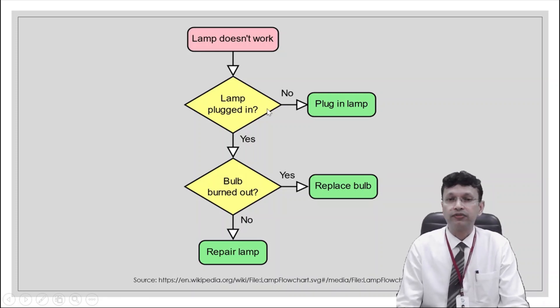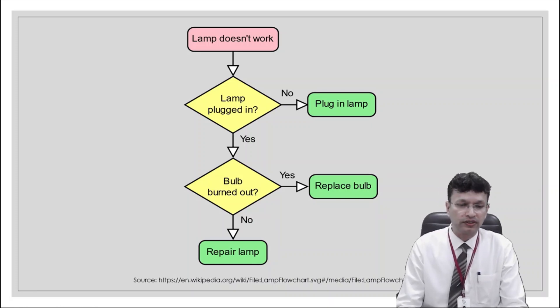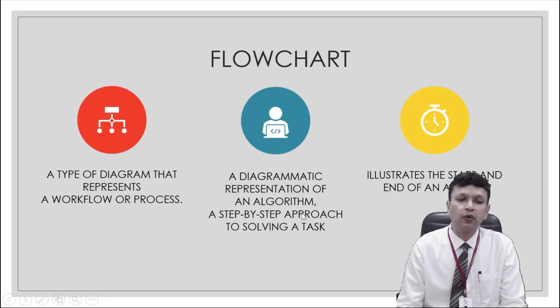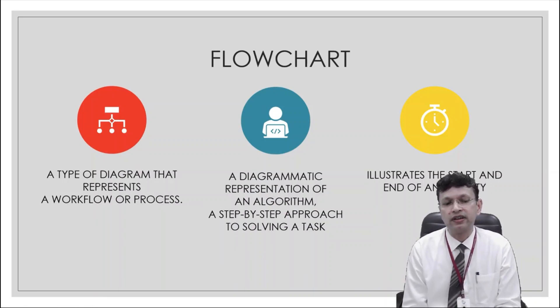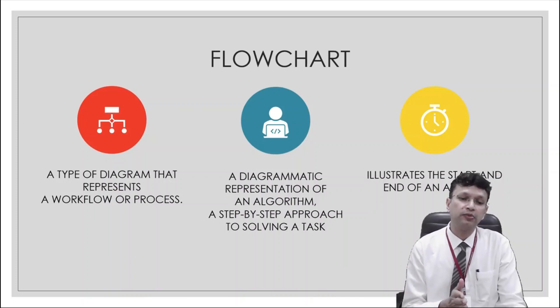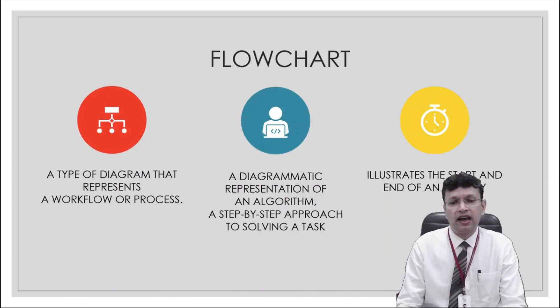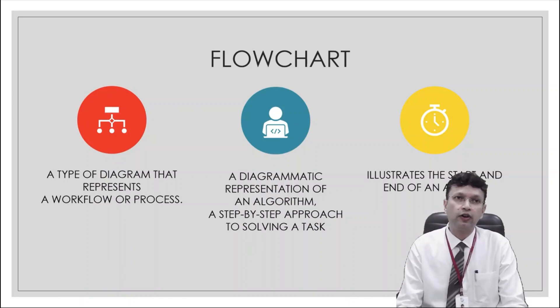If it is not plugged in what we'll do? We'll plug in the lamp. If it is plugged in we'll check if the bulb is burnt out. If yes we need to replace the bulb. Otherwise we need to repair the lamp. Now this is an example of flowchart. So flowchart are what? It's a type of diagram that represents workflow or progress. It's a diagrammatic representation of algorithms. We know that algorithms are a step-by-step approach to solving a task and it illustrates the start and end of an activity.